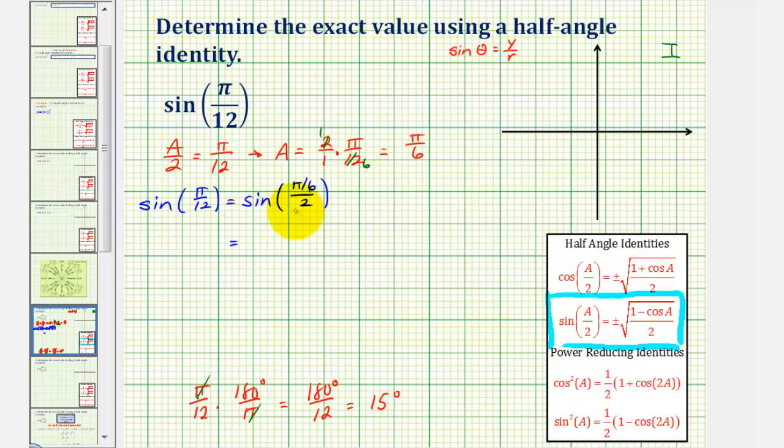And therefore, the sine function value is going to be positive. And as we know, all of the trig function values are positive in the first quadrant. So we know we'll have a positive square root. And then we'll have one minus cosine a, which now we know is cosine pi over six. And all this is divided by two.